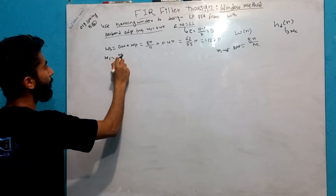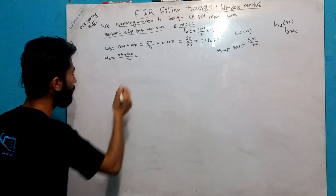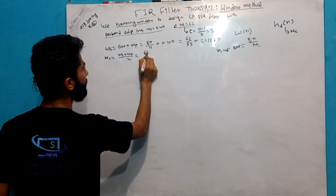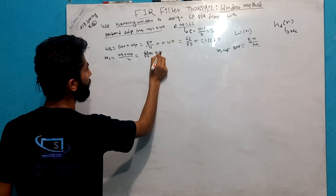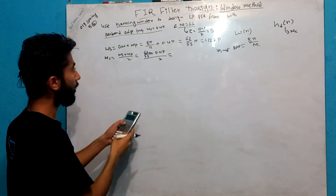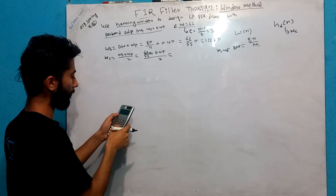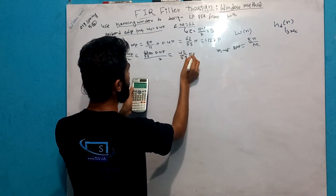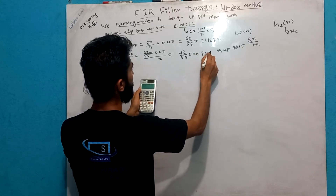Omega c equals omega s plus omega p divided by 2. So omega s is 62/55 π plus omega p is 0.4π, divided by 2, which is 42/55 π, which comes to be 0.7636π.